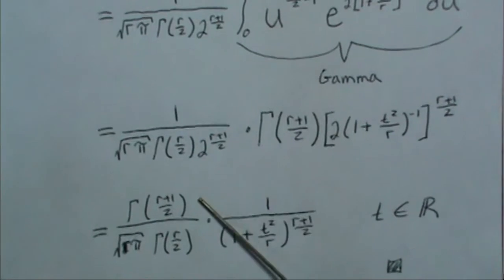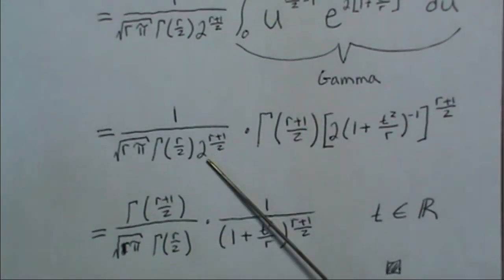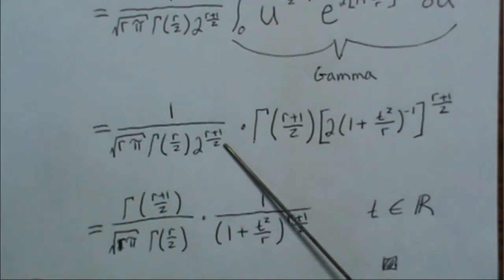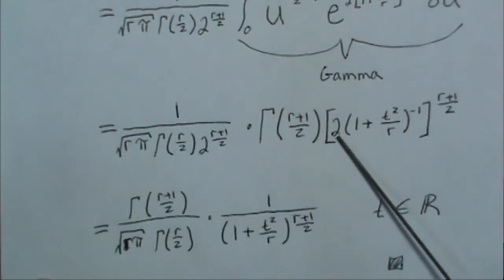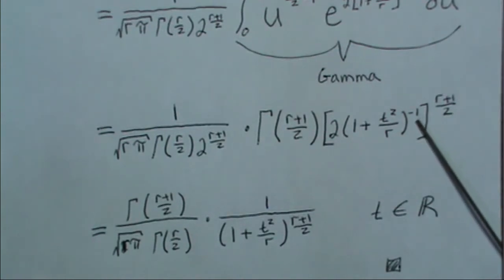So now we simplify this. The gamma just moves over. The r and the pi stay the same. This 2 raised to the r plus 1 over 2 cancels with this 2 raised to the r plus 1 over 2. There's a negative exponent here, so we just take it down to the bottom.